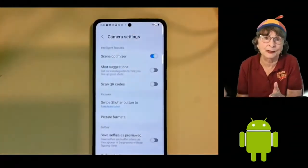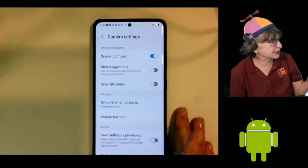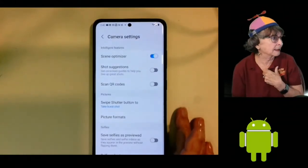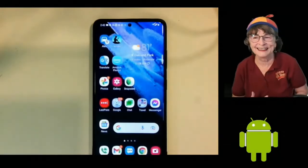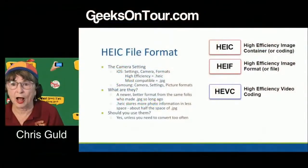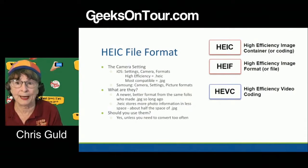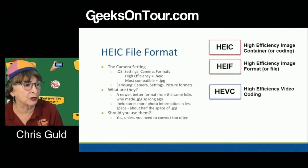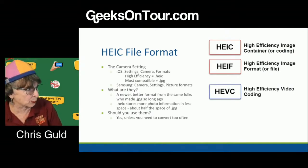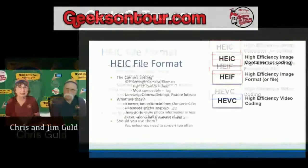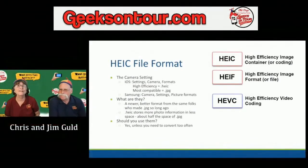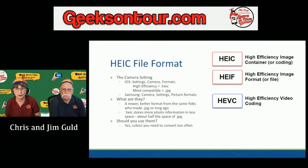I don't know how many Android phones have it — the Pixel does not, for example. So just what is HEIC? It's a newer, better format for storing pictures. It's from the same folks that made JPEG so long ago — the MPEG, Motion Picture Experts Group, made that format and it's old. So they've made a new one. It's better; it stores more information in a smaller space.